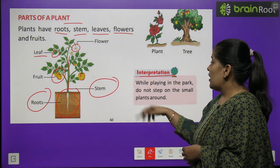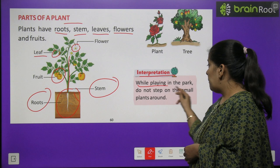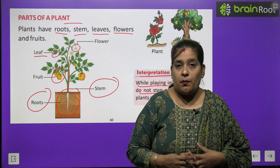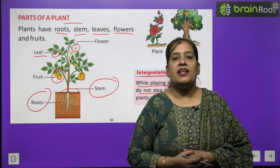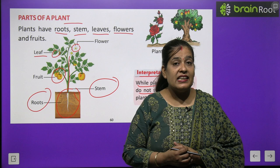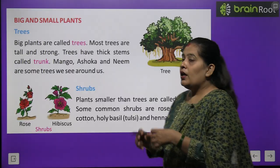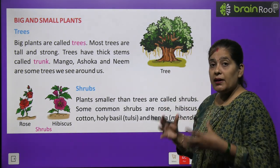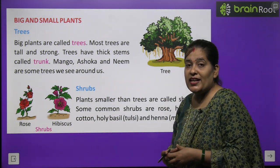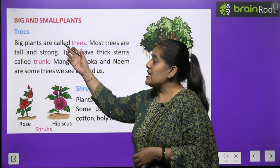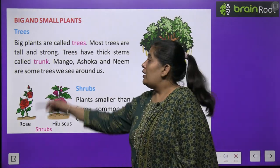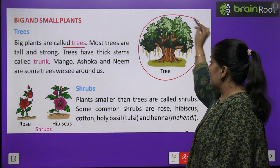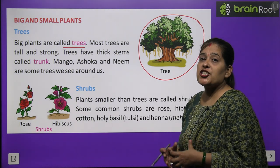Interpretation: While playing in the park, do not step on the small plants around. जब आप park या मैदान में खेलें तो छोटे पौधों पर पैर नहीं रखना चाहिए। Now we will learn about big plants and small plants. Trees: Big plants are called trees. बड़े पेड़ों को हम trees यानी वृक्ष कहते हैं।